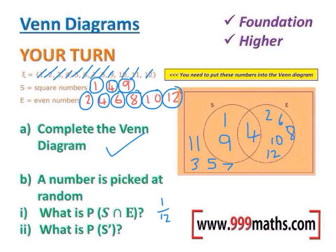Part B: what's the probability of picking a number which is not in S? Well, be really careful here. The numbers which are in S are 1, 9, and 4. So the numbers that are not in S: 1, 2, 3, 4, 5, 6, 7, 8, 9. There are 9 which are not in S. So that would be 9 out of 12, and that would simplify to 3/4.